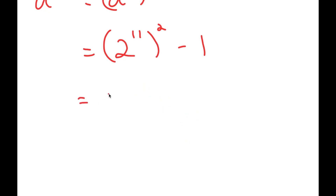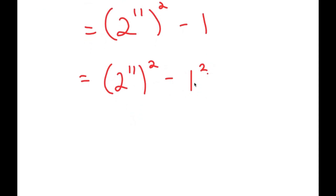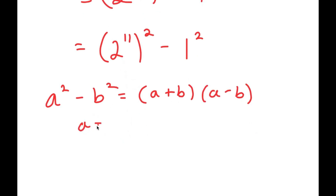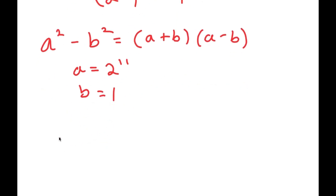Now, 1 is the same thing as 1 squared. So now I have 2 to the power of 11, to the power of 2, minus 1 squared. The reason I rewrote 1 as 1 squared is because now I can use the property: a squared minus b squared equals a plus b times a minus b. So just to clarify, a is 2 to the power of 11 and b is 1. So now I get 2 to the power of 11 plus 1, times 2 to the power of 11 minus 1.